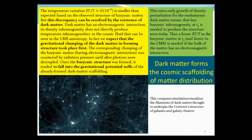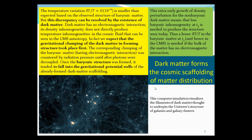So dark matter forms the cosmic scaffolding for matter distributions. Here is a computer simulation showing filaments of dark matter that underpin the universe's structure of galaxies, with baryonic matter falling into the gravitational wells constituted by the dark matter. How about cosmic inflation, primordial gravitational waves, and CMB polarization? This is really chapter 10 material, but I'll just give you a preview.